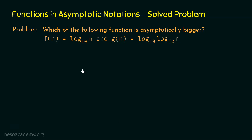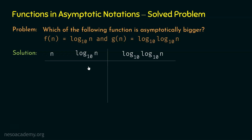I hope you are done. Here comes my solution to this problem. f(n) is log n base 10 and g(n) is log(log n base 10) base 10. We need to find which of these functions is asymptotically bigger than the other. Let's draw the table for f(n) and g(n) and plug in different values of n into these two functions. Here comes the table for log n base 10 and log(log n base 10) base 10.